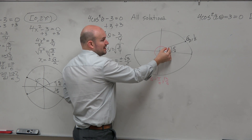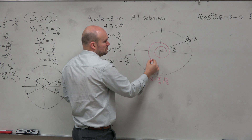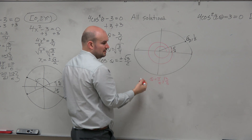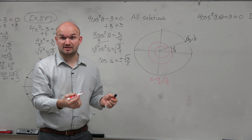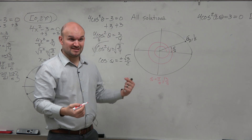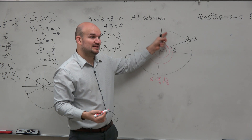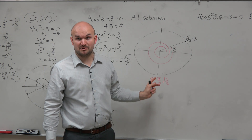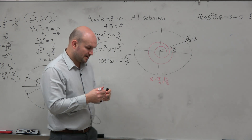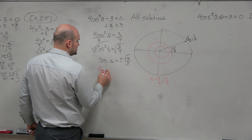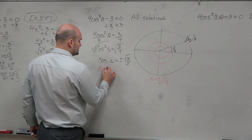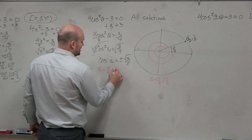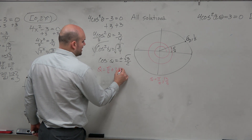And then could I add 2π again? Sure, why not? That's going to be now 25π/6. And you guys can see the problem — I can keep on adding 2π as many times as possible. So I could say all the solutions is theta equals π/6 plus 2πn.